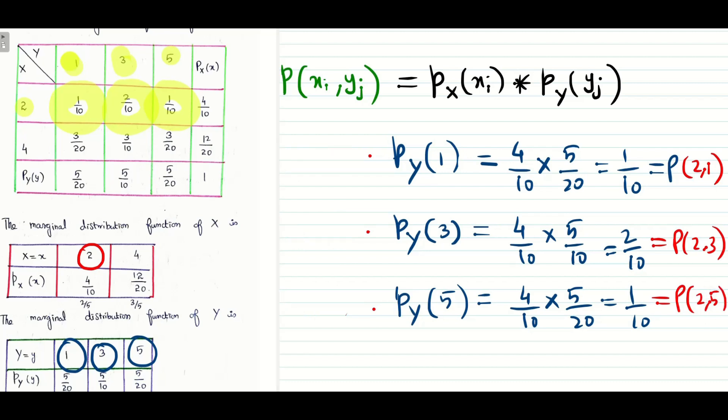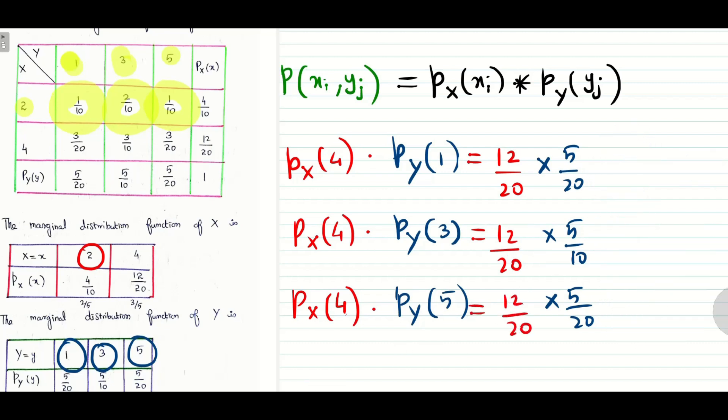Similarly, now we have to calculate the values for X equal to 4. Only the values of X will change here, so it is going to be 12 by 20 times each Y probability. By computing the values, we will be getting 3 by 20, 3 by 10, 3 by 20.